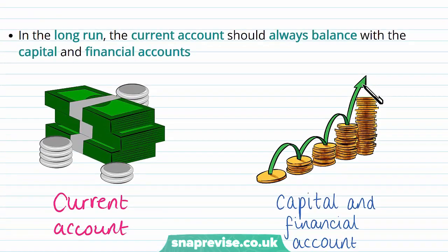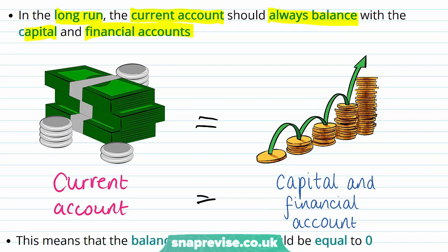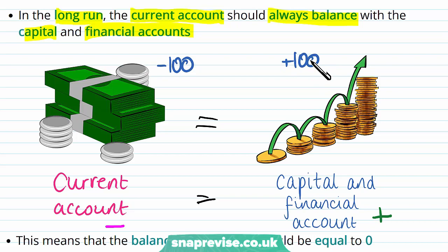However, we are going to be mainly focusing on the current account. In the long run, the current account should always balance with the capital and financial accounts. The balance of payments should always be equal to zero, because if the current account is a negative number and the capital account is a positive number, when we sum these together — say the current account is minus 100 and the capital account is plus 100 — then the balance of payments equals zero.